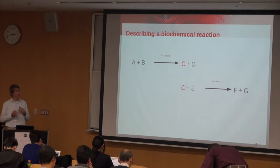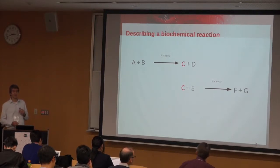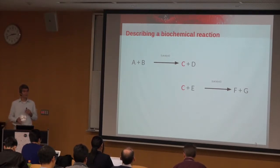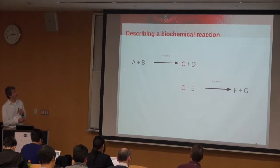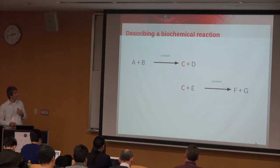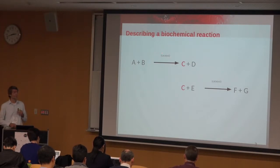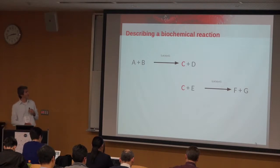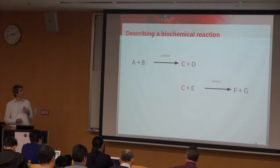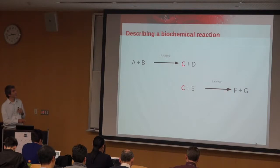Our job is to describe a biochemical reaction. The core business is to describe accurately the reaction participants. On the left, the reactants A and B, giving, with a catalyst controlling the reaction, the products C and D. It's crucial to chemically define each participant in a normalized way. This is the prerequisite in order to put the reactions in a network to identify the common participants.